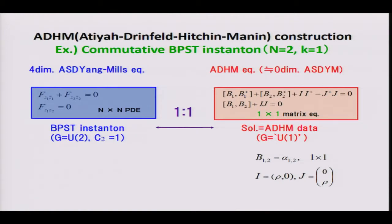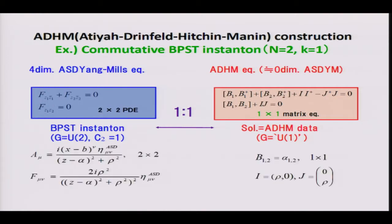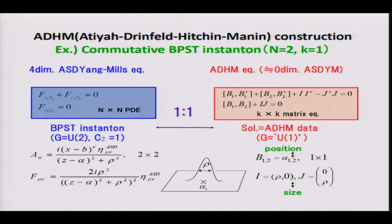Secondly, we solve the duality map. This is also, in fact, a matrix equation, so good high school students could solve this within 10 minutes. Then we get a perfectly non-trivial configuration — the famous BPST instanton solution — localized in four-dimensional space. We can see the meaning of the parameters: alpha corresponds to the position of the instanton, and rho corresponds to the size of the instanton. The diagonal elements of B correspond to the position, and I and J carry the information of the size. This point is also important in non-commutative settings.